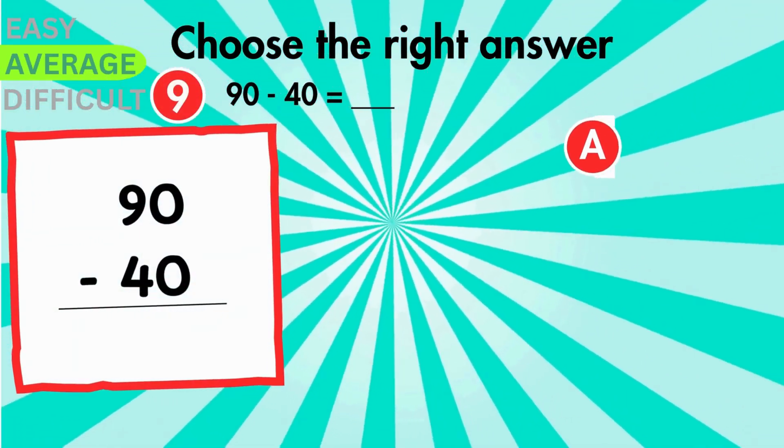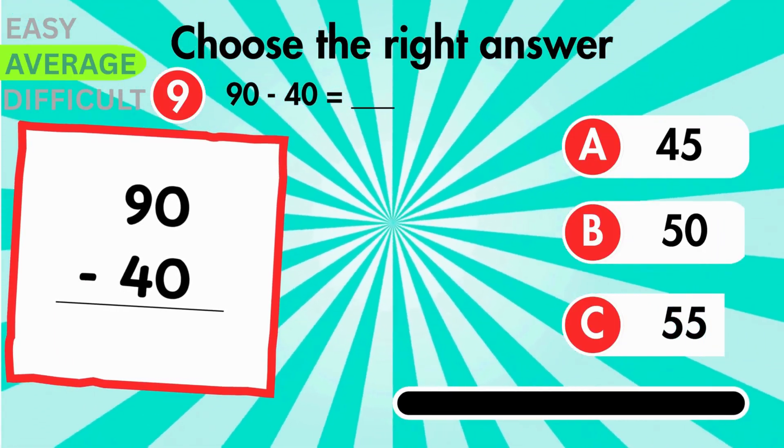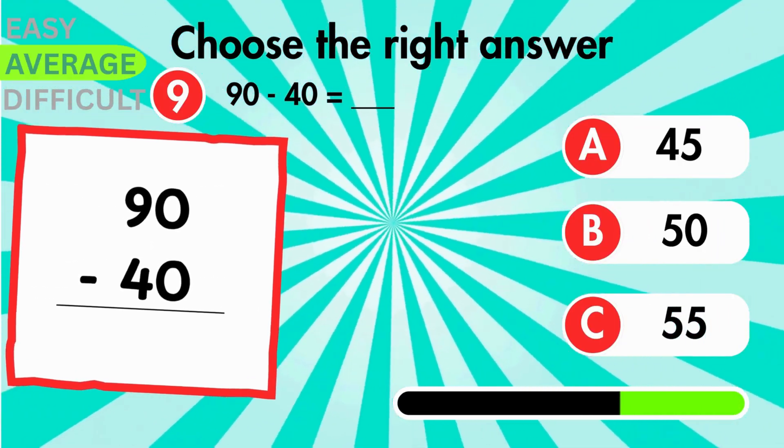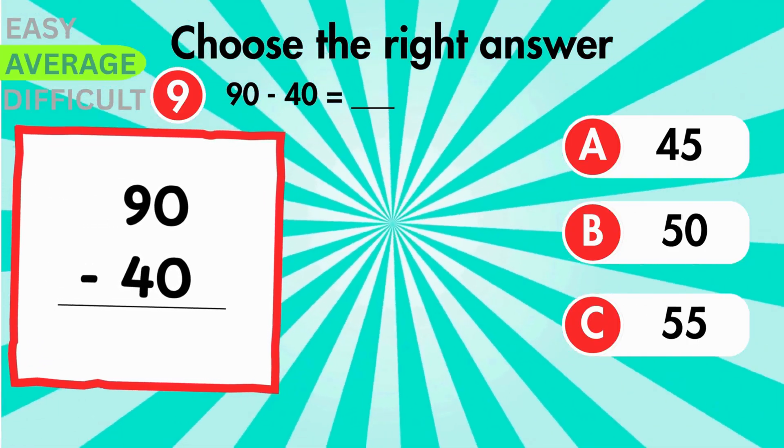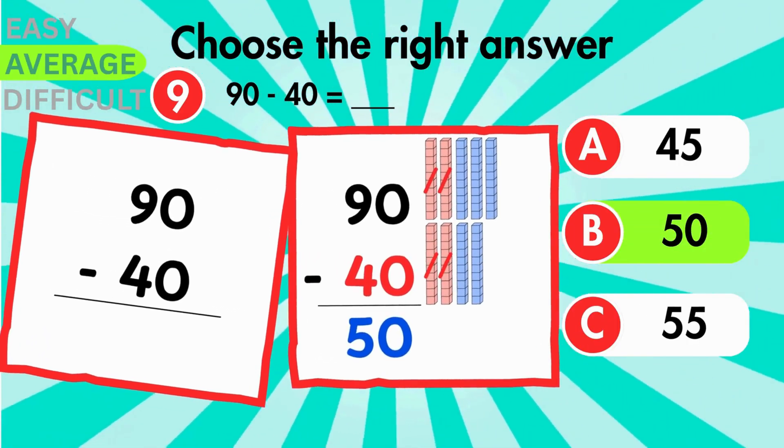Take away 40 from 90. What's the result? The result is 50.